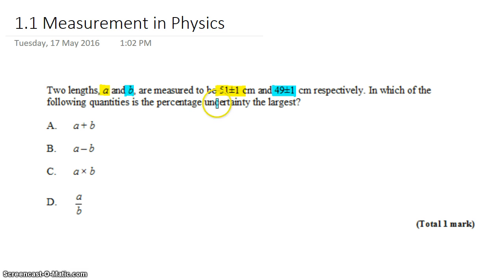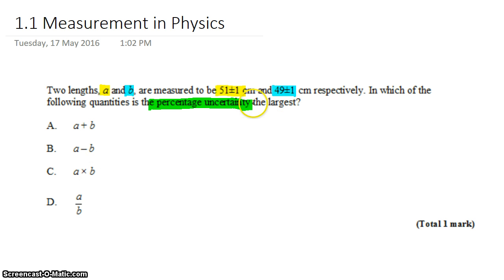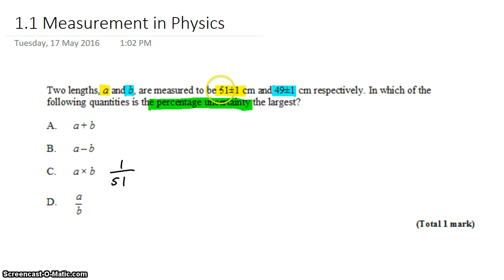In which of the following quantities is the percent uncertainty the largest? If you don't know the answer right off the bat, we could calculate the percent uncertainty for each case. For multiplication and division, it's as simple as adding the percent uncertainty of each term. We have the absolute uncertainty, which is 1 centimeter. To get the percent uncertainty, divide the absolute uncertainty by the value and multiply by 100%.